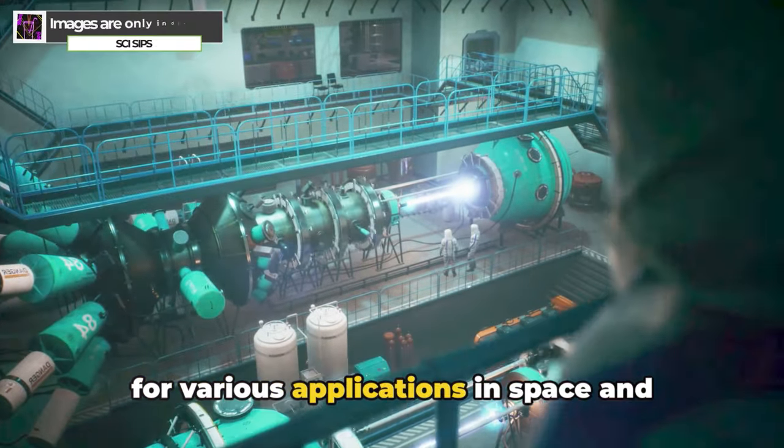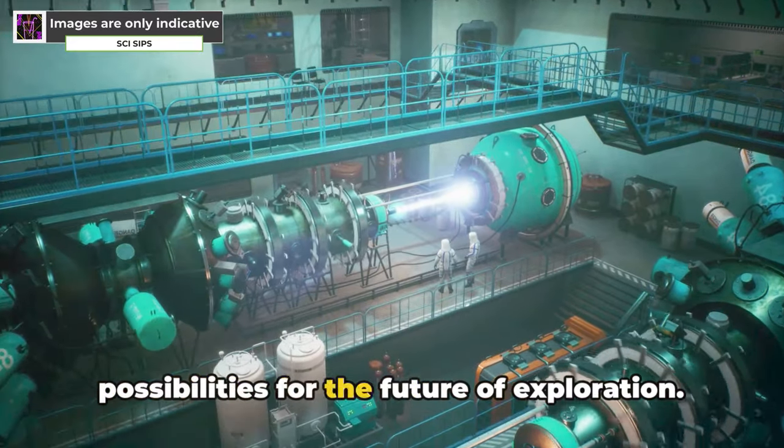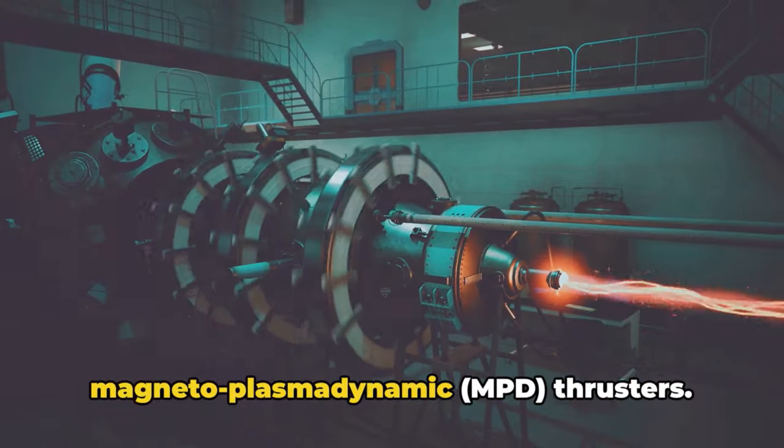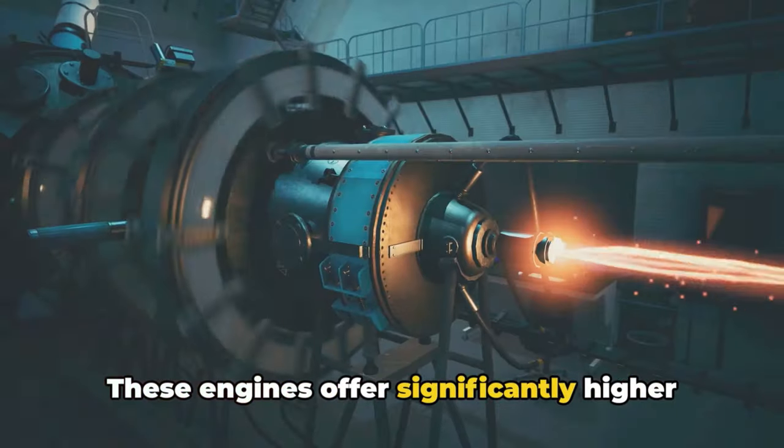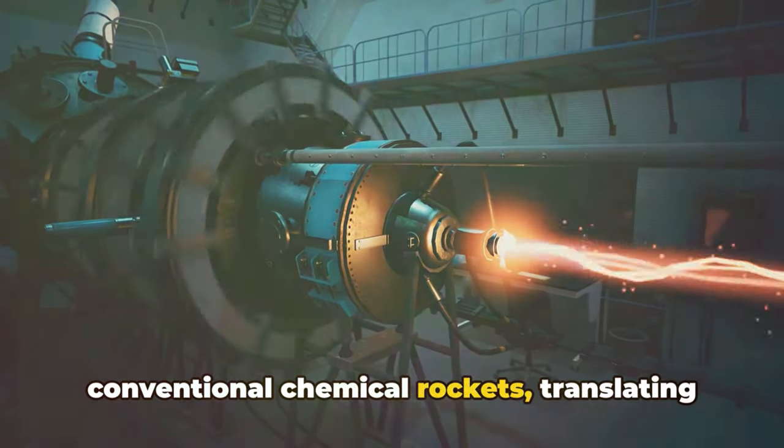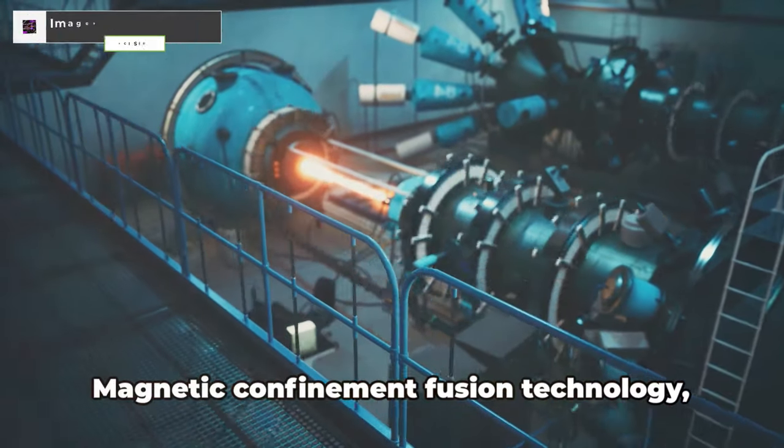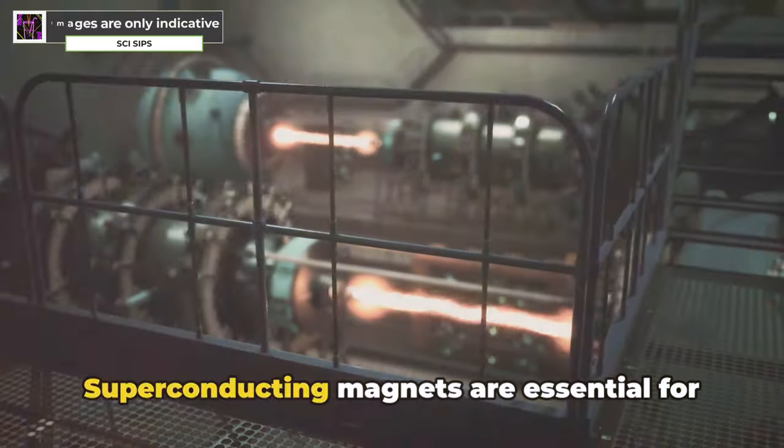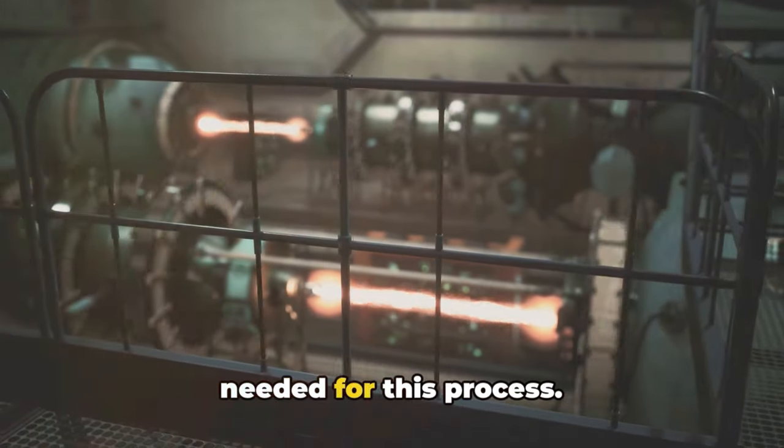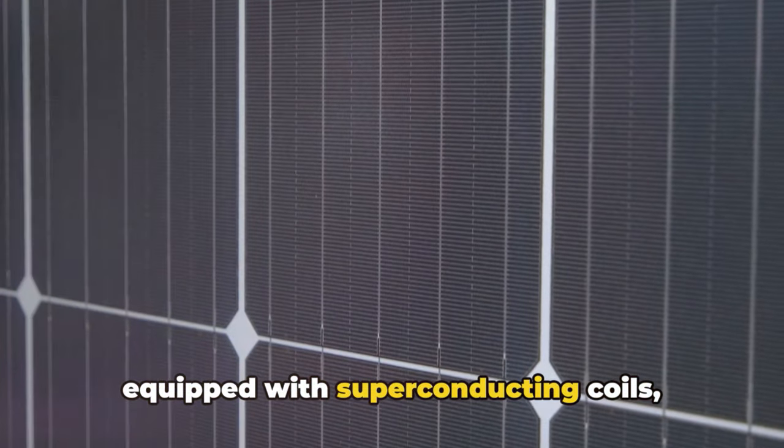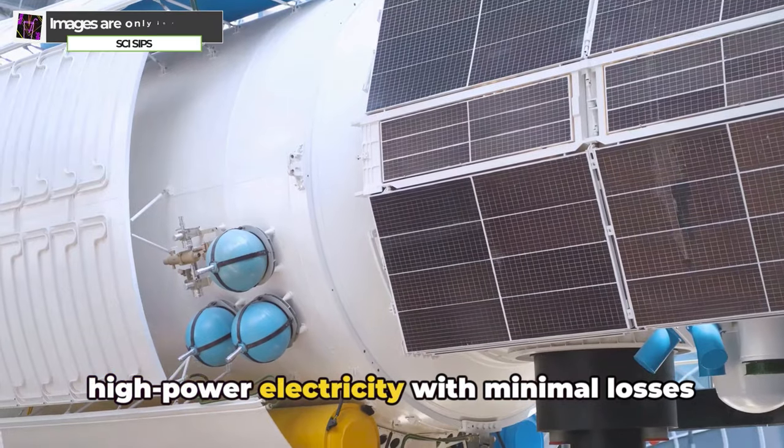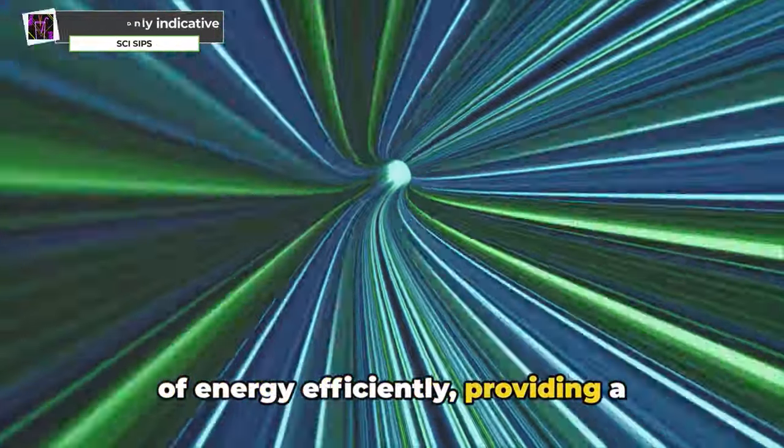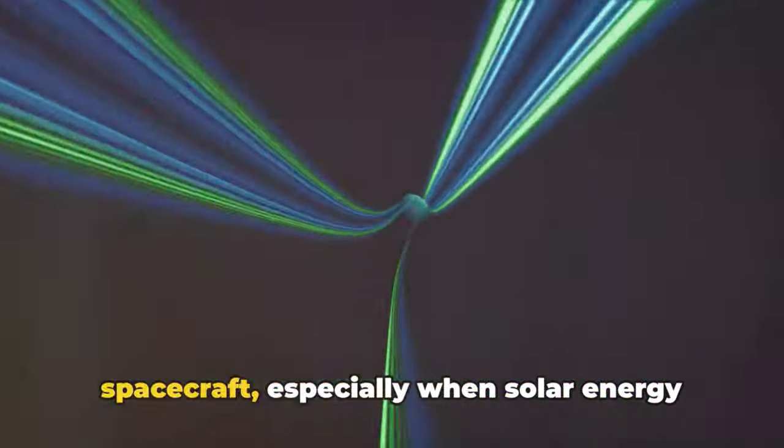Superconductors hold immense potential for various applications in space and space travel, offering exciting possibilities for the future of exploration. Superconducting magnets can create powerful and efficient magnetic fields used in ion thrusters and magnetoplasma dynamic MPD thrusters. These engines offer significantly higher exhaust velocities compared to conventional chemical rockets, translating to faster missions and increased payload capacity. Magnetic confinement fusion technology, currently under development, aims to achieve miniaturized fusion reactors for spacecraft. Superconducting magnets are essential for confining the high-temperature plasma needed for this process.